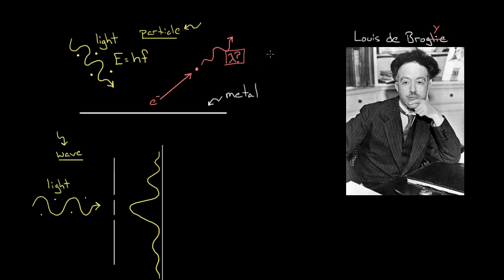He set out to figure out what this wavelength would be, and he figured it out. It's called the de Broglie wavelength. He postulated — he didn't really prove this, he motivated the idea, and it was up to experimentalists to try it out — that the wavelength associated with things we thought were matter, sometimes called matter waves, is going to be equal to Planck's constant divided by the momentum of that electron.